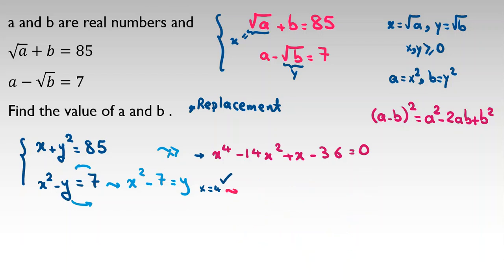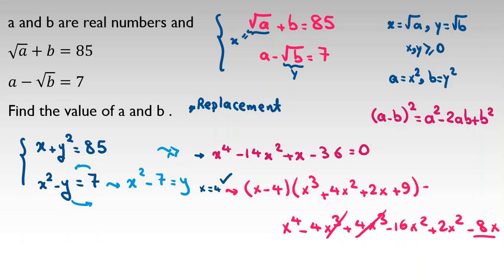When x equals 4 is a root, one factor is x minus 4, and this is a very important and useful rule. Now I want to create this. I want to create x to the 4, so I place x cubed. It will be x to the 4 minus 4x cubed. I don't have x cubed here, so I should cancel this. I place 4x squared, which gives 4x cubed minus 16x squared. Now I want to reach negative 14x squared, so I should place plus 2x squared, which gives 2x squared minus 8x. We have negative 8x, so I want to reach x. I need 9x plus 9 and it will be exactly what we want.